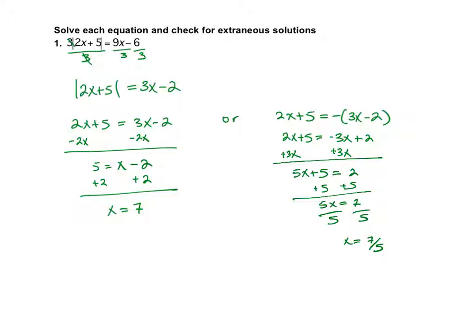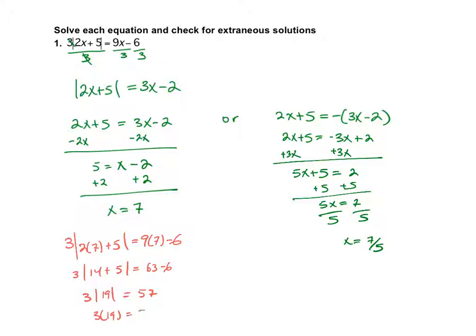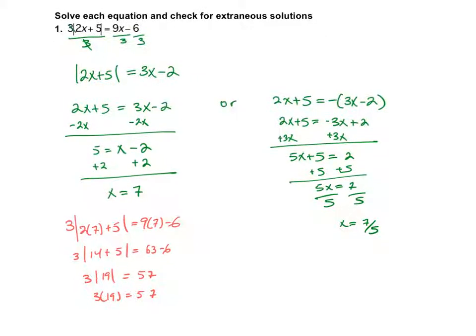Now I'm going to check my work. I'm going to substitute into the equation. So 2 times 7 plus 5 equals 9 times 7 minus 6. So 3 times 14 plus 5 equals 63 minus 6. So 3 times the absolute value of 19, which is 3 times 19. So 57 equals 57.